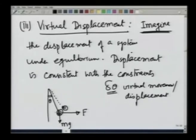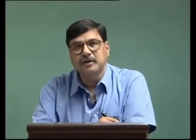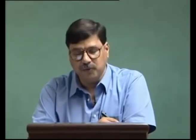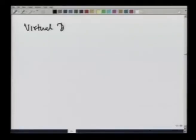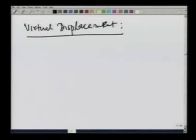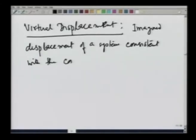On the other hand, if I moved the bob along the string, the length of the string would change, and that motion would not be consistent with the constraint condition. Therefore, I cannot call that motion a virtual motion. So, virtual displacement is an imagined displacement of a system consistent with the constraints. I have already given you the example of the pendulum.